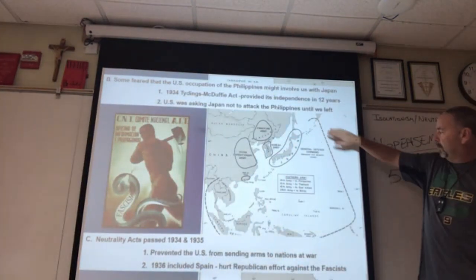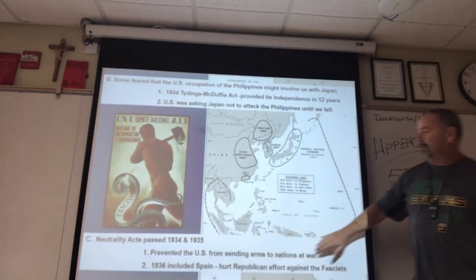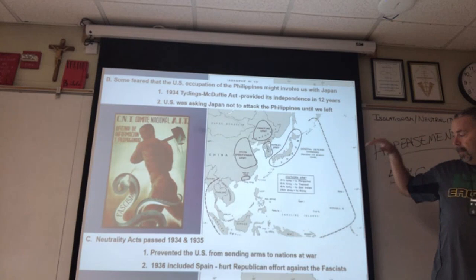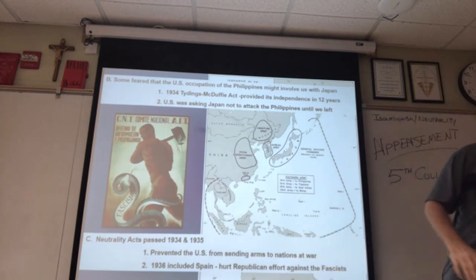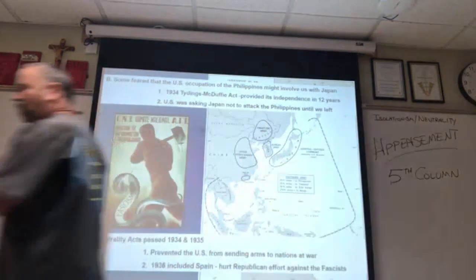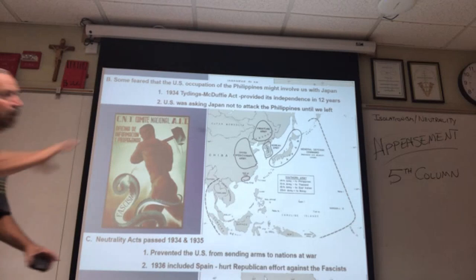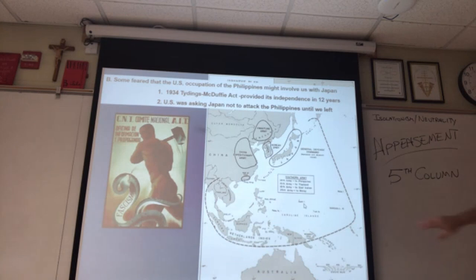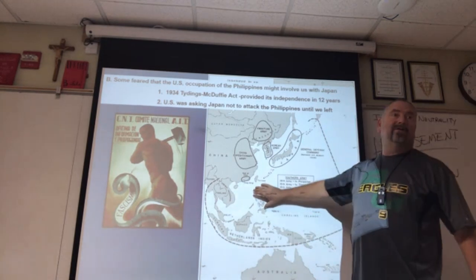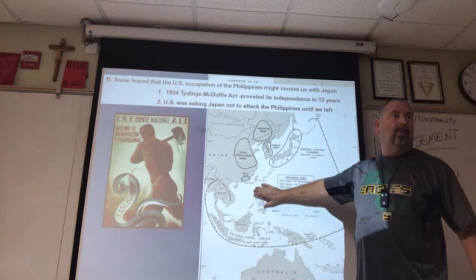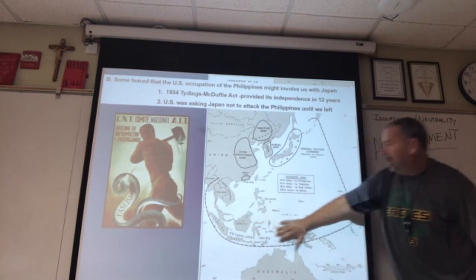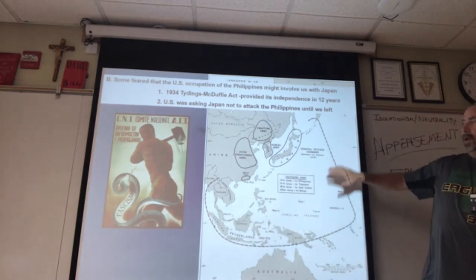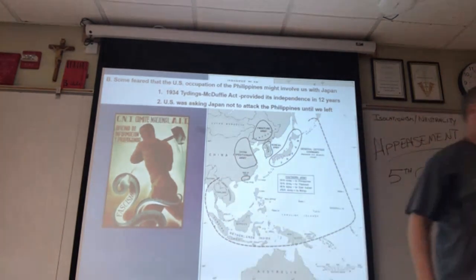This map shows the furthest expansion of the Japanese empire throughout the war, so it's a little post-dated. They don't control all of this yet. They'll attack on December 7, 1941, and then take all of this.